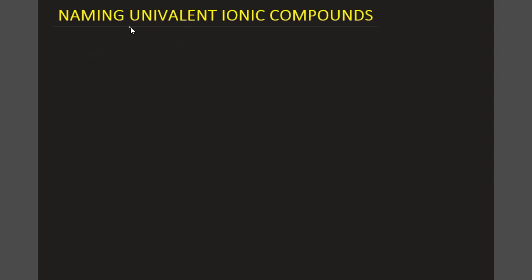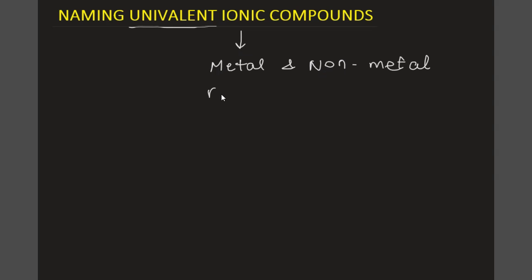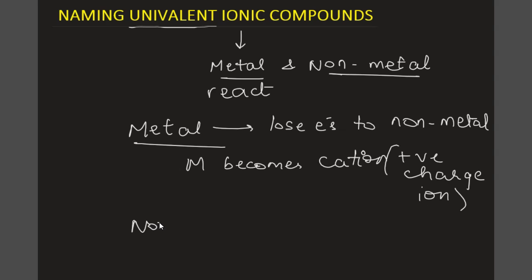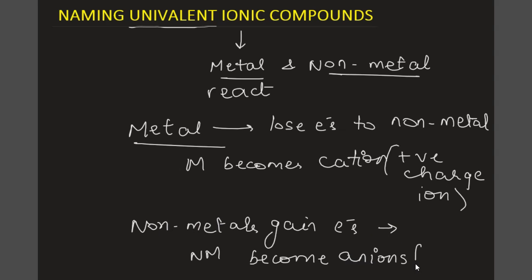There is a word 'univalent', so we need to understand what is a univalent ionic compound. As we know, ionic compounds are formed when a metal and a non-metal react. The metal is going to lose electrons to a non-metal. When a metal loses electrons, it becomes positively charged — also called a cation. Non-metals are going to gain electrons and become anions, which are negatively charged ions.